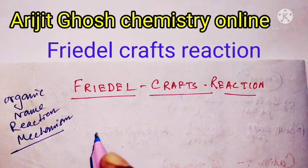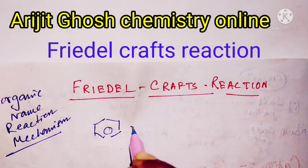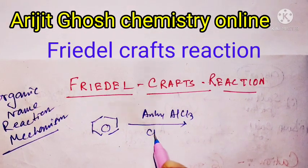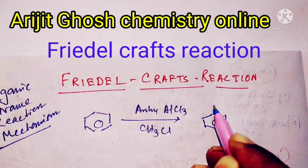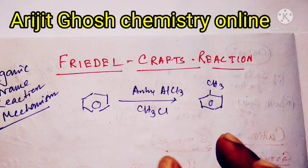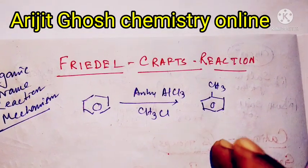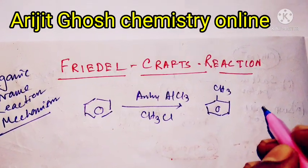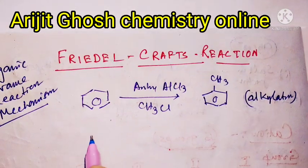We all know that whenever a benzene ring reacts in presence of anhydrous aluminum chloride and methyl fluoride, it will produce toluene as the main product. This is the Friedel-Crafts alkylation — the alkylation product.